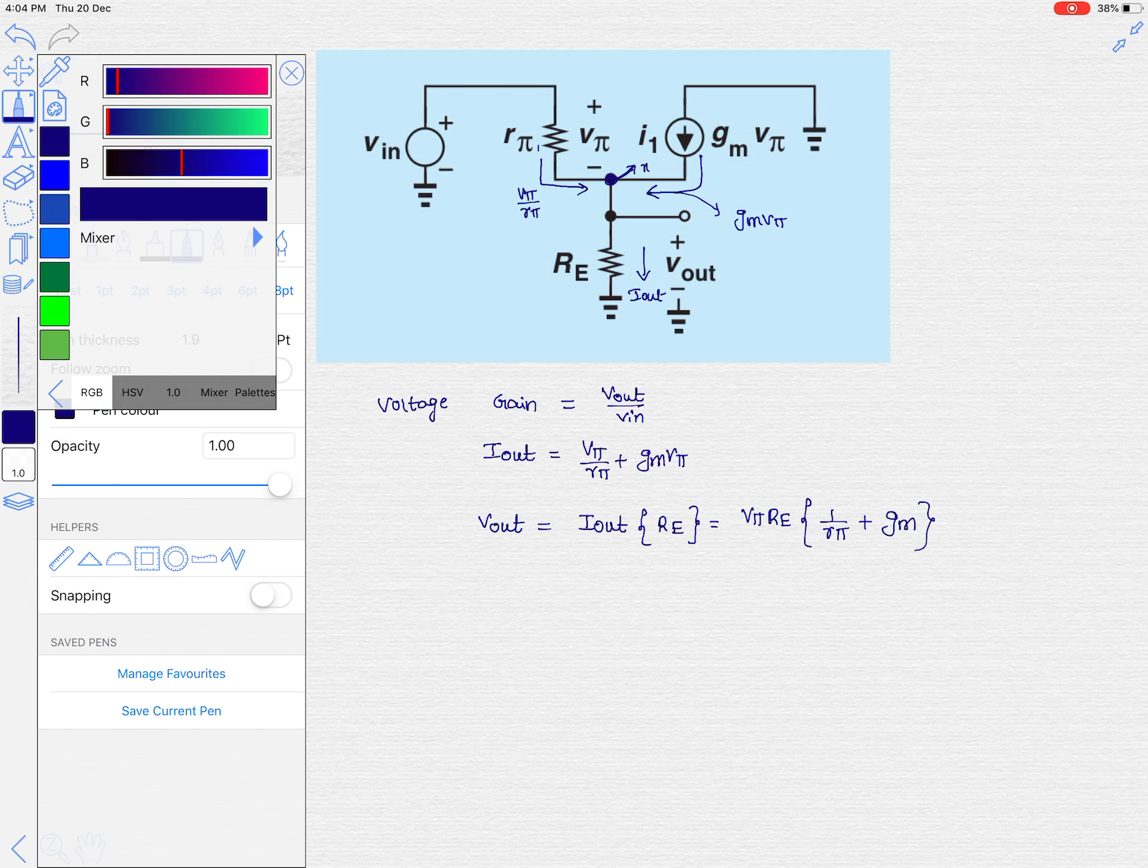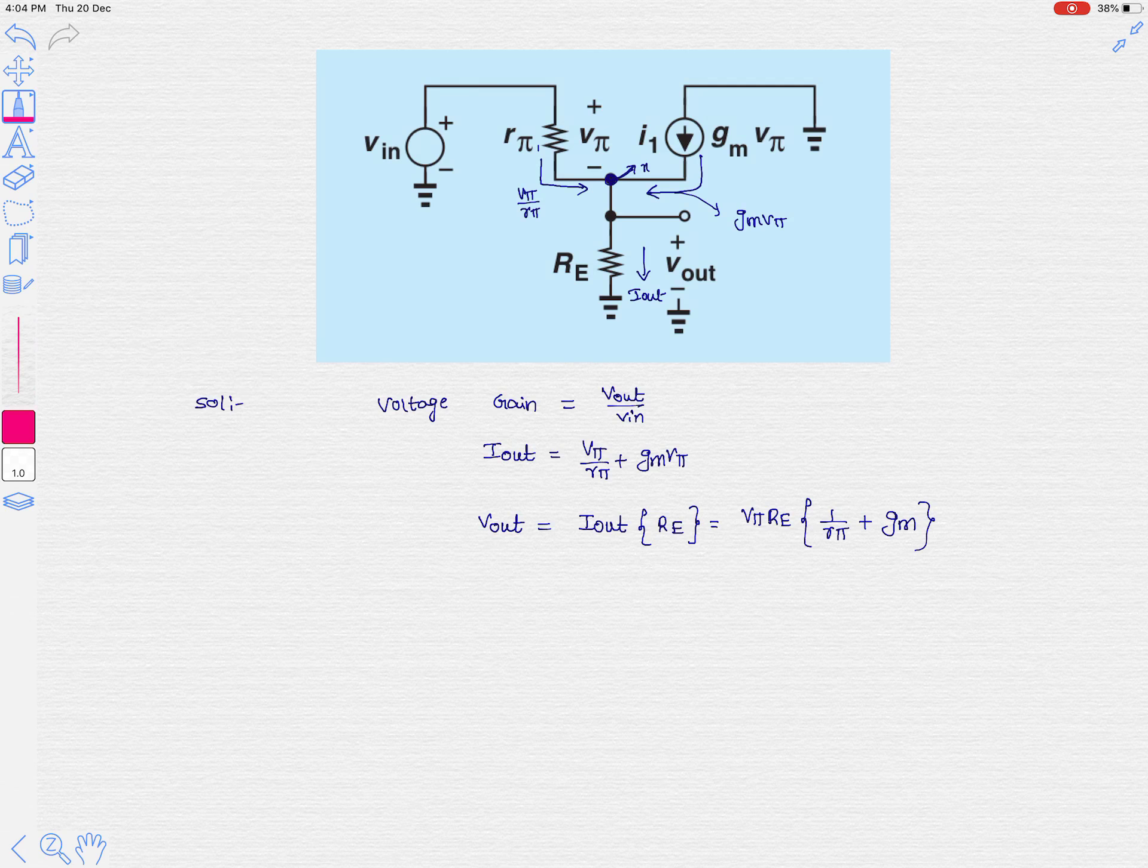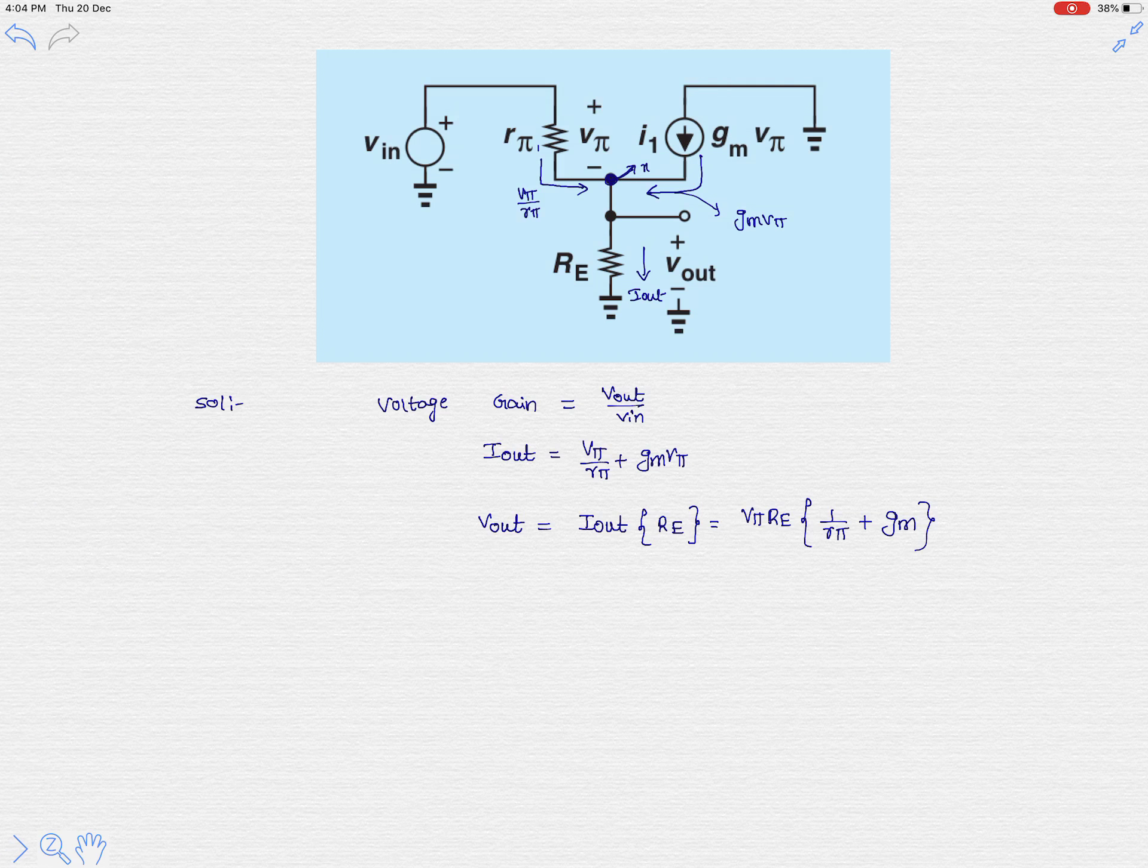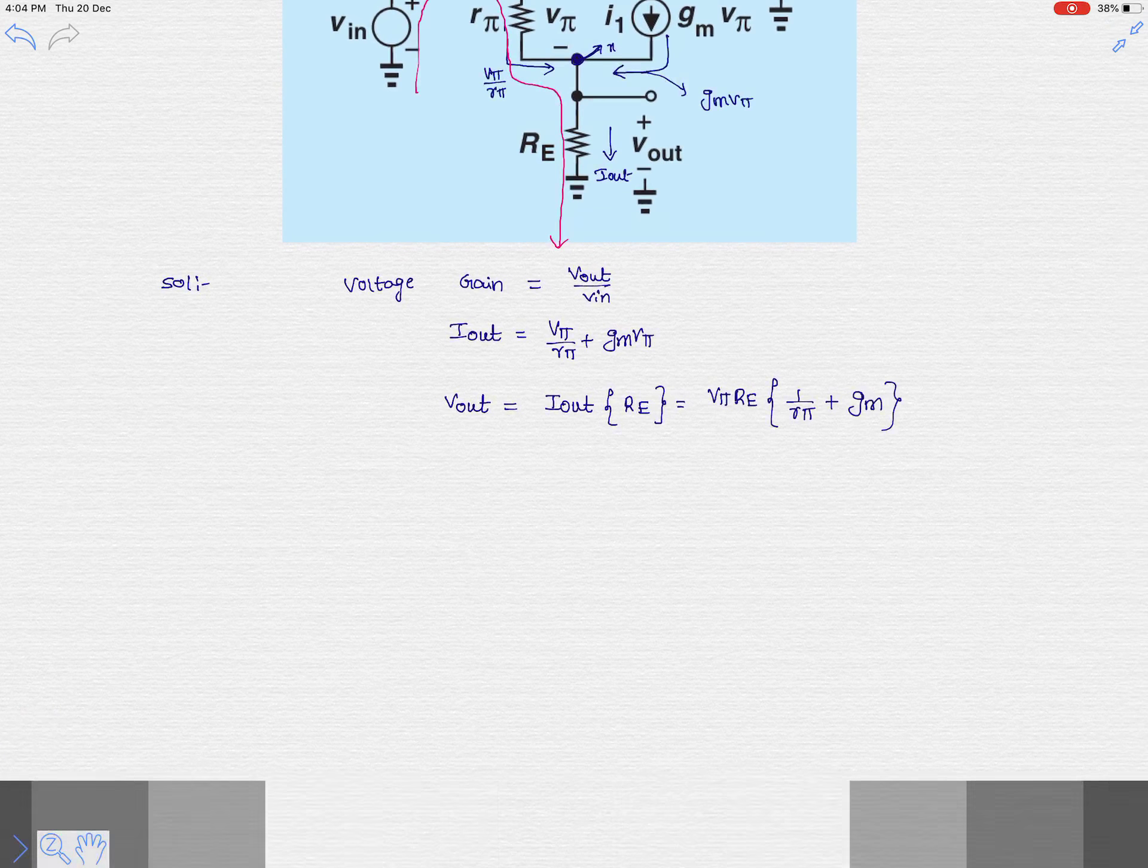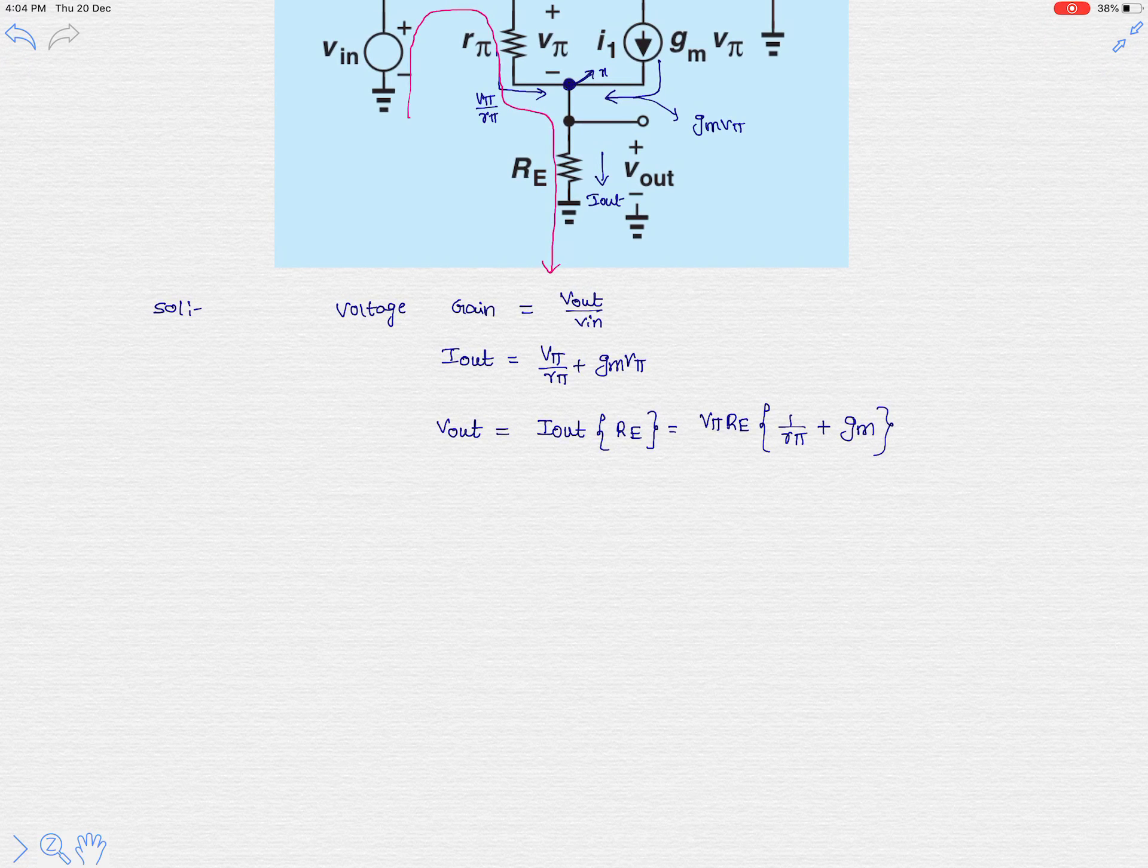Let's write a KVL equation in this loop, the loop shown in the pink color pen. So it is minus v_in plus v_π plus v_out equals 0. From this KVL equation it is clear that v_π is minus v_out plus v_in, so that is nothing but v_in minus v_out.